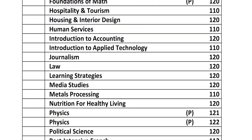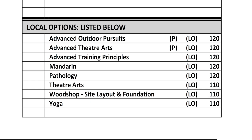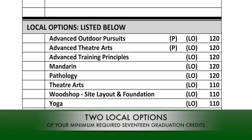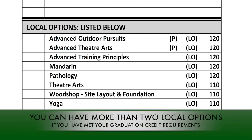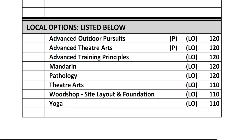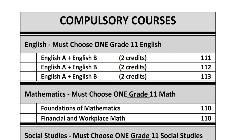Remember, out of 17 credits — which is the minimum total for graduation — students can only have a total of two local option courses on their academic transcript. If a student obtains more than 17 credits, they may have an additional local option course. When choosing your courses, be aware of what local option courses are and what that means for your graduation eligibility. These local options are listed in a separate section below the other elective courses. Also remember that grade 11 English is worth two credits, so you need your grade 11 English course plus eight other courses.